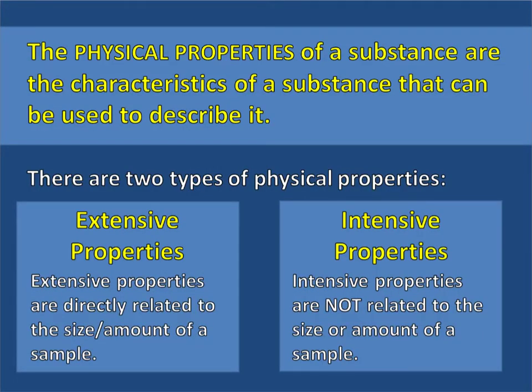All substances have properties, and properties are kind of like characteristics — they're things that describe that particular substance. So there are chemical properties and there are physical properties. Today we're going to talk about the physical properties and how we can figure out what those are. The physical properties of a substance are their characteristics that we can use to describe it — what it looks like, what color it is, maybe even how it feels. So those would be physical properties.